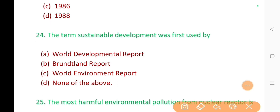24. The term sustainable development was first used by? The correct answer is option C. World Environment Report.